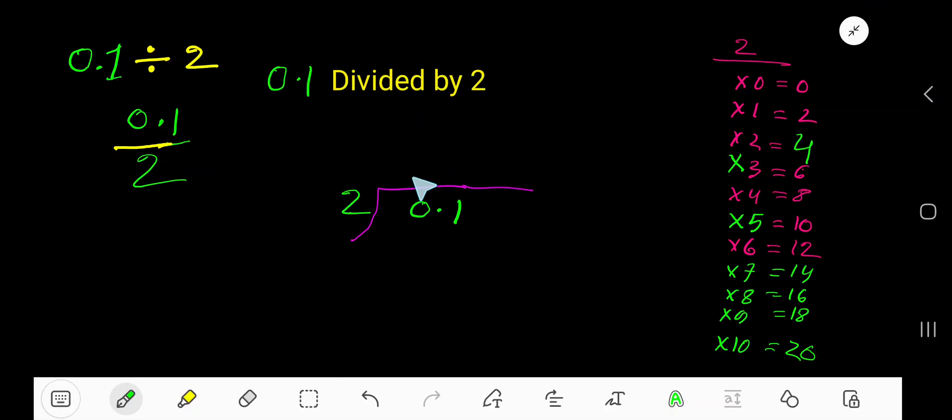0.1 divided by 2. Here 2 is a divisor, so we need the multiplication table of 2: 2 times 0 is 0, 2 times 1 is 2, 2 times 2 is 4. To find the multiplication table of 2, just add 2 with the previous step. That is 0 plus 2 equals 2, 2 plus 2 equals 4. This will continue. 2 goes into 0...